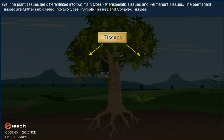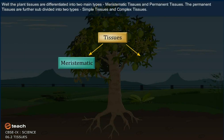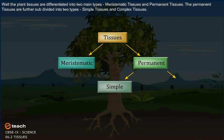The plant tissues are differentiated into two main types: Meristematic tissues and permanent tissues. The permanent tissues are further subdivided into two types: simple tissues and complex tissues.